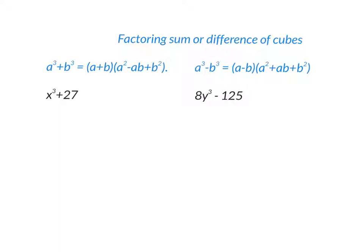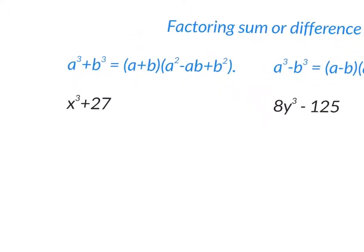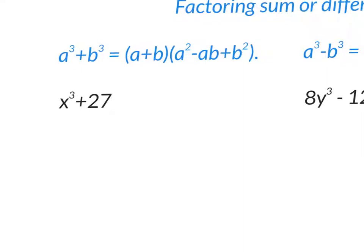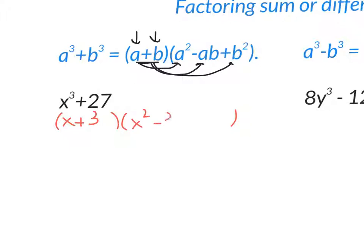Sum and difference of cubes follow a pattern: one small parenthesis and one large. In the small parenthesis, take the cube root of each term. In the large parenthesis, square the first term, multiply the two cube roots together and change the sign, then square the second term. For x³ + 27: cube root of x³ is x, cube root of 27 is 3. So you get (x + 3)(x² − 3x + 9). Subtraction works the same way.